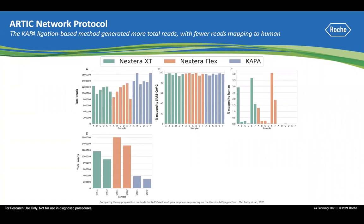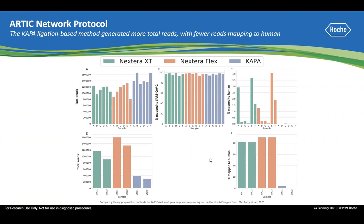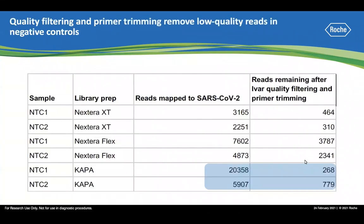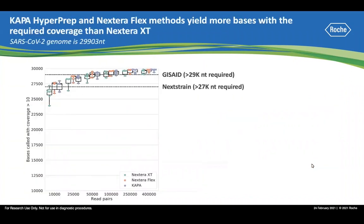Looking at the no-template controls (NTCs), there is a significant number of total reads in libraries prepared from the two tagmentation workflows, with most of those reads mapping to humans. About 1% of reads in the NTCs prepared by KAPA HyperPrep workflow mapped to SARS-CoV-2. However, after removing low-quality reads by quality filtering and primer trimming, the actual number of SARS-CoV-2 reads in NTCs from KAPA HyperPrep workflows is very low and similar to Nextera XT, and significantly lower than Nextera Flex. These SARS-CoV-2 reads in the NTCs are likely the result of index hopping.